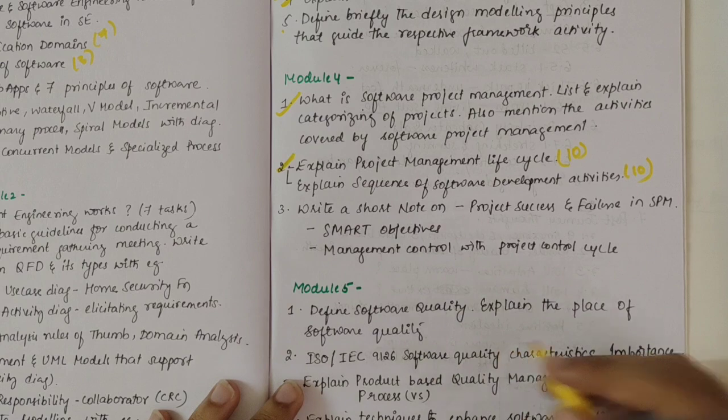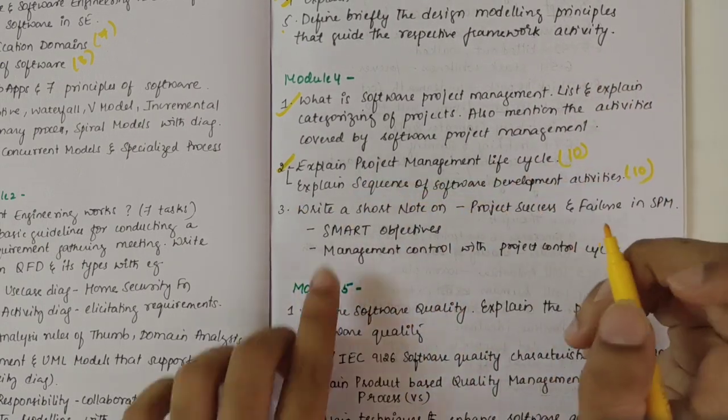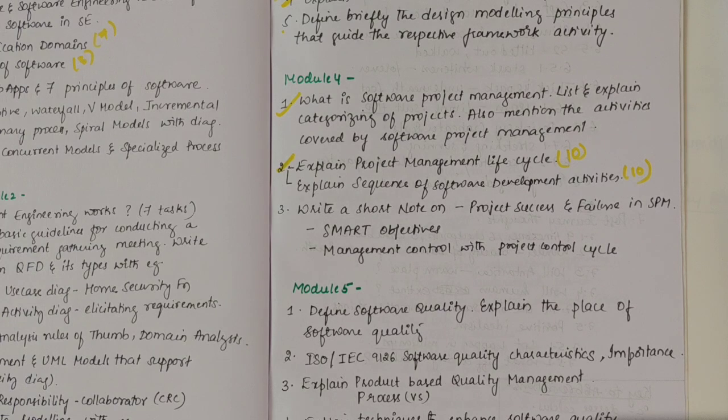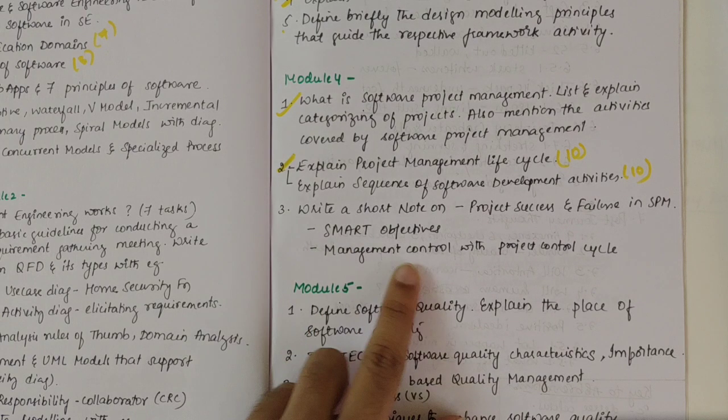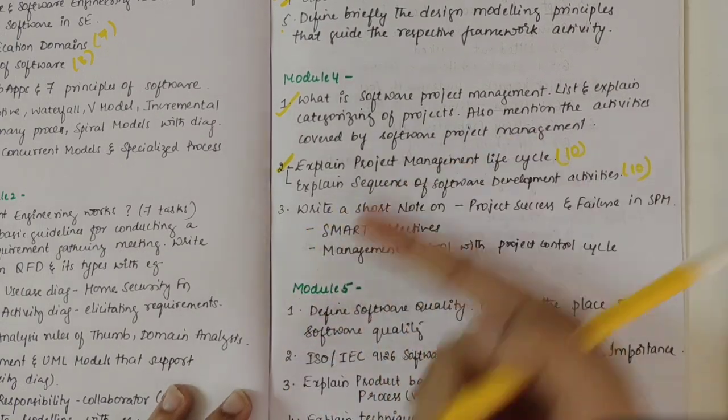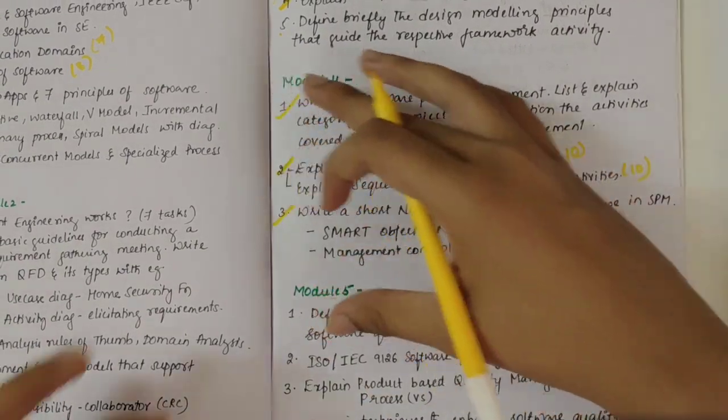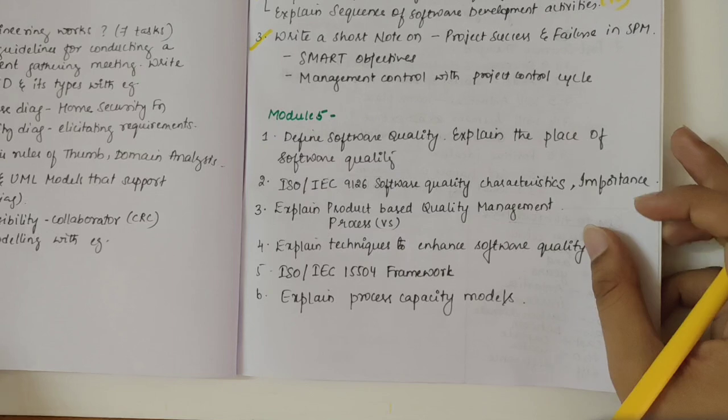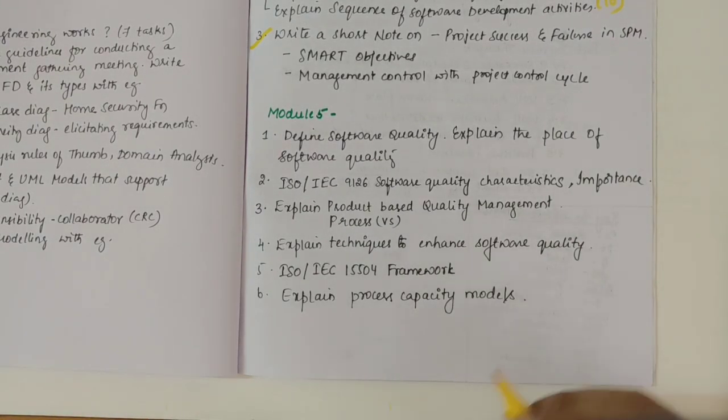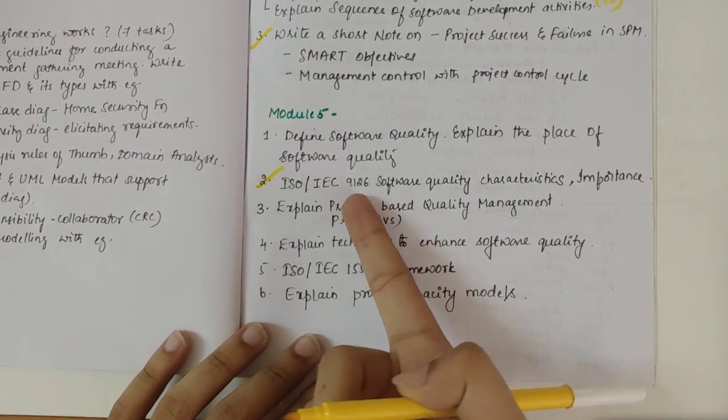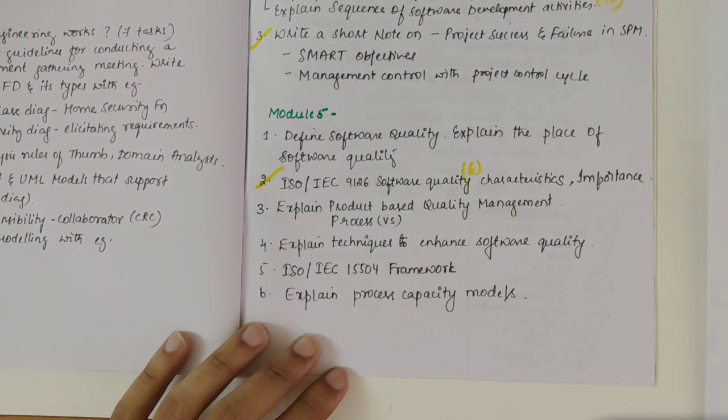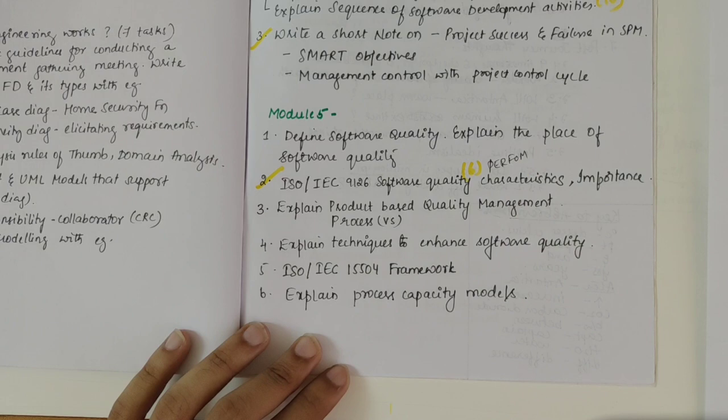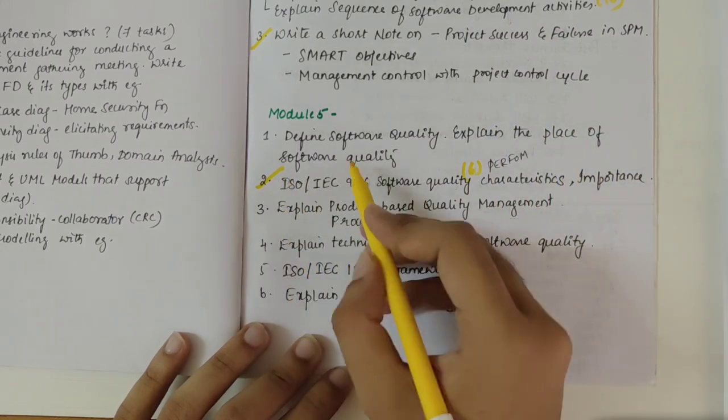We have project success and project failure in software project management. Then we have SMART objectives and management control. Then explain the place of software quality - define software quality. Then ISO/IEC 9126 Square quality characteristics and importance of software quality management. This is important one. If you remember it is perfume, P-E-R-F-U-M - P for portability, efficiency, reliability and all of that.